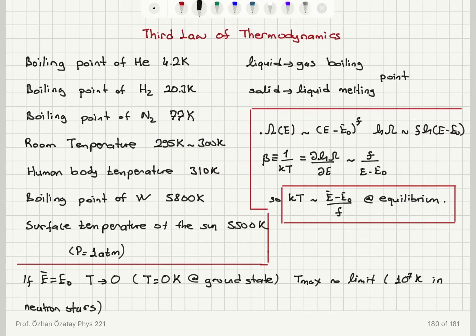Okay, so basically we talked about a few important temperatures in the Kelvin scale. Boiling point of helium, 4.2 Kelvin. Hydrogen, 20.3 Kelvin. Nitrogen, 77 Kelvin. Room temperature corresponds to 295 Kelvin. Human body temperature, 310 Kelvin. The record boiling point of elements is for tungsten, 5,800 Kelvin. And for a reference, surface temperature of the Sun is 5,500 Kelvin. These values, except for the surface temperature of the Sun, are all reported at one atmospheric pressure.